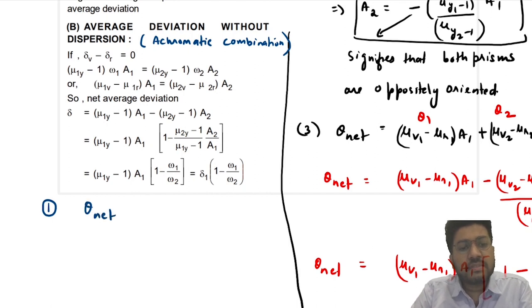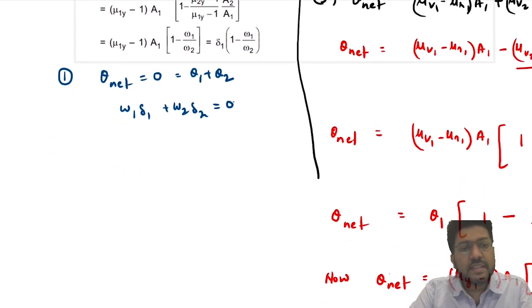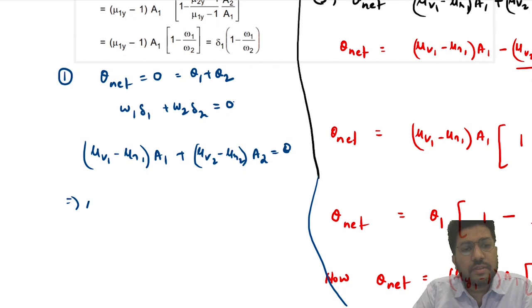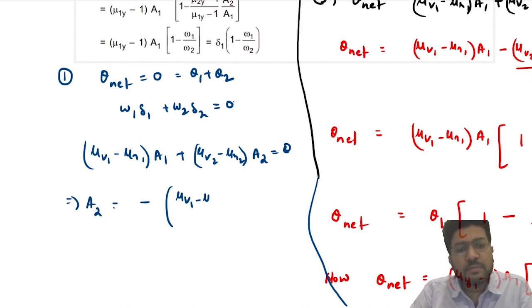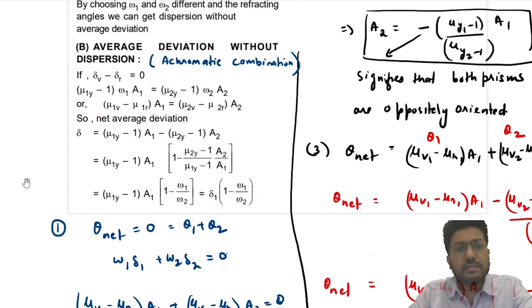If achromatic combination is there, the condition is θ_net = 0. Since θ = ω·δ, we get ω₁·δ₁ + ω₂·δ₂ = 0. A second way: (μ_v1 − μ_r1)·A₁ + (μ_v2 − μ_r2)·A₂ = 0, giving A₂ = −[(μ_v1 − μ_r1)/(μ_v2 − μ_r2)]·A₁. This is the condition of deviation without dispersion, or achromatic combination.